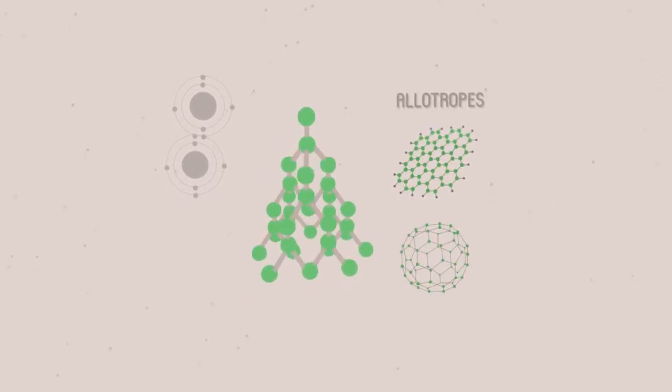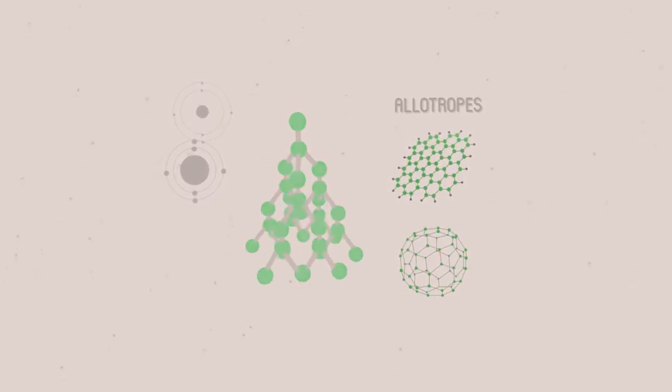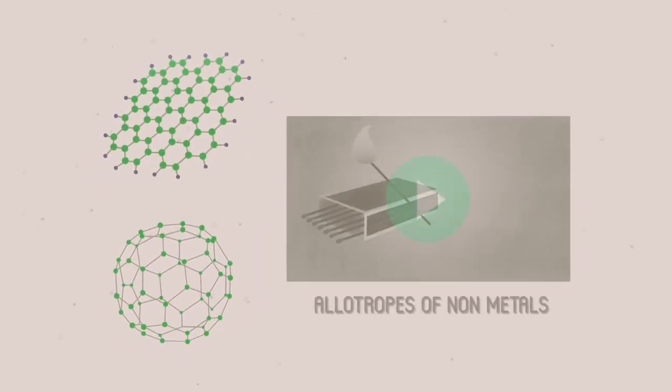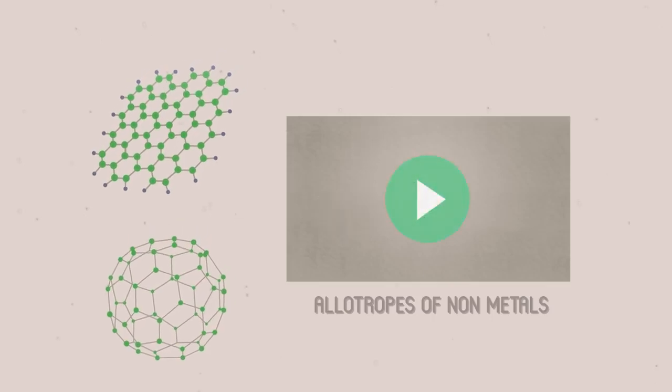Allotropes of non-metals bond covalently. Allotropes are different structures of the same element. You can learn more about these in our video, Allotropes of Non-Metals.